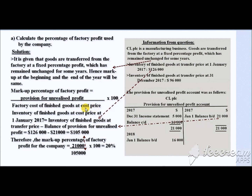In this formula we need inventory at cost price, whereas in the question the inventory is given at transfer price. To get the value at cost price, we take the inventory value at transfer price and subtract the provision for unrealized profit. So we take $126,000 and subtract $21,000 to get $105,000. Applying this in the formula: $21,000 divided by $105,000 times 100, we get the factory profit as 20%.